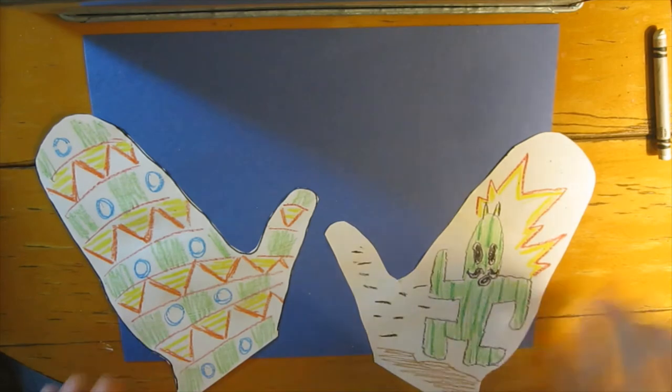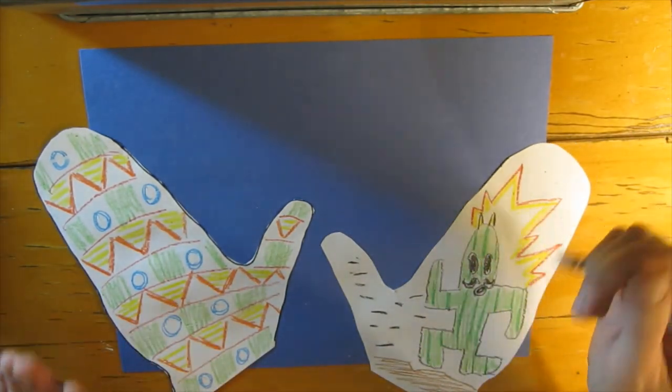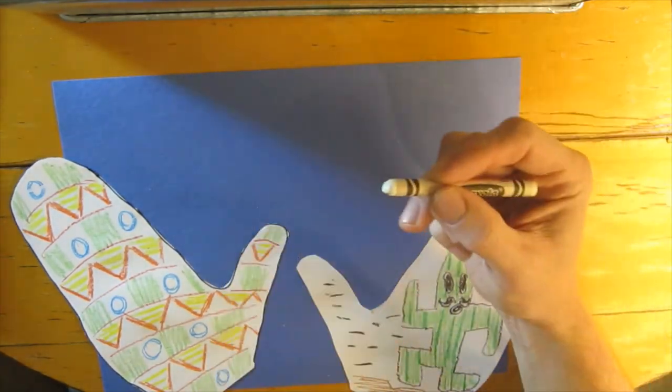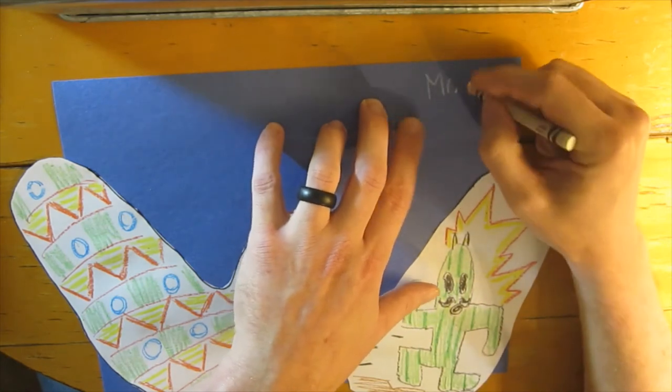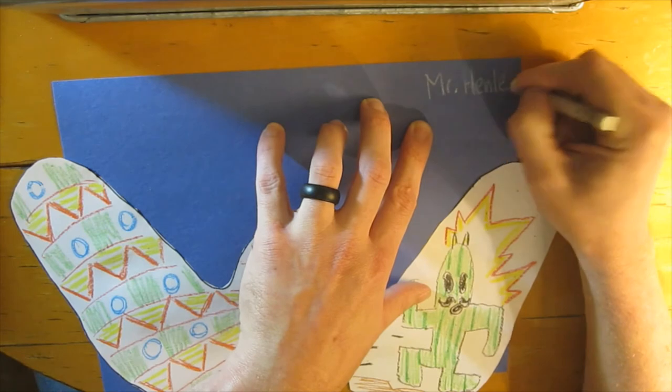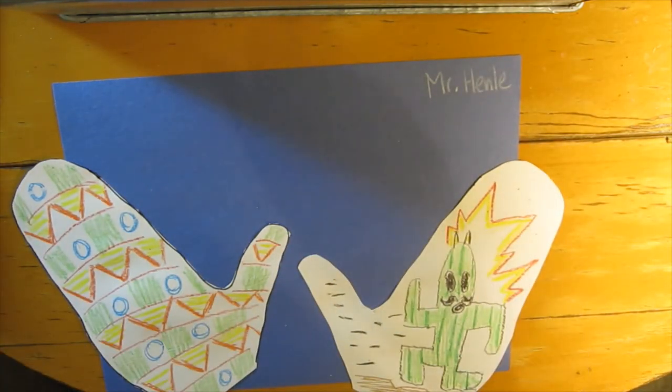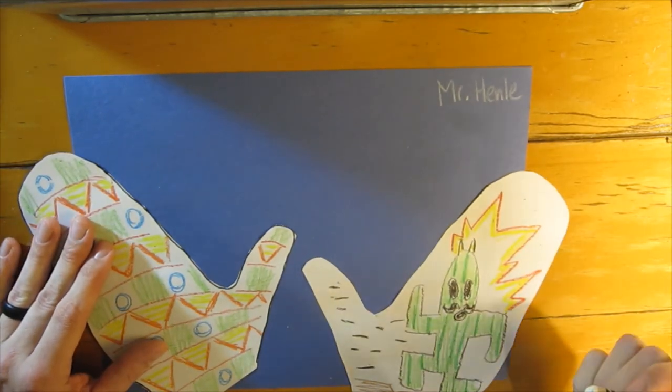On this colored paper, one very important thing you've got to put on there is your name. I'm gonna put my name up here in the corner. I'm using a white crayon because I've got kind of a dark colored paper here. Then the rest of this space, maybe we'll get this year what we haven't gotten in quite a while: some snow. Let me show you a really easy way to draw a snowflake.